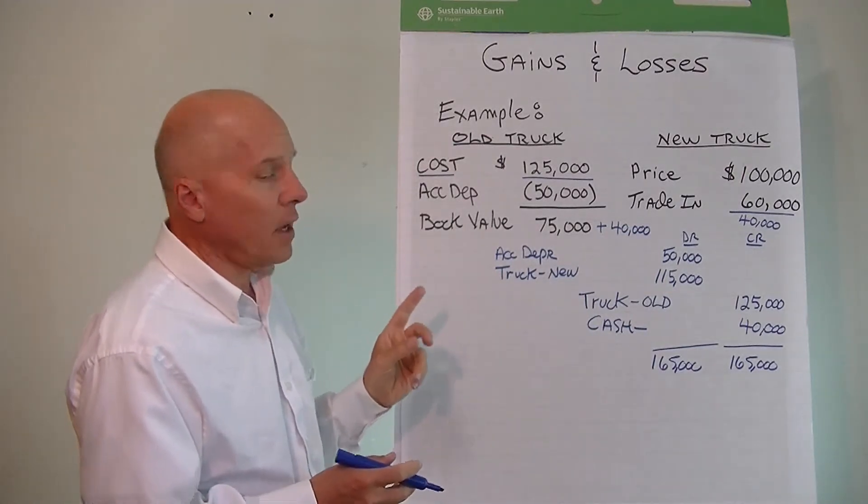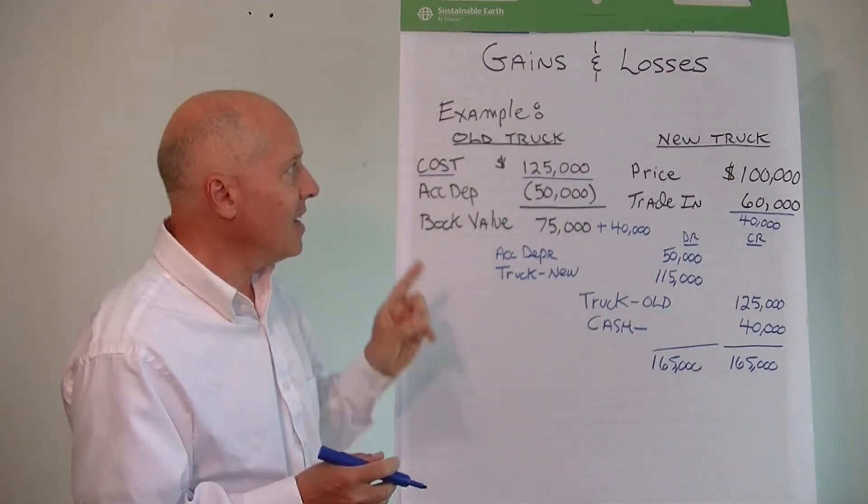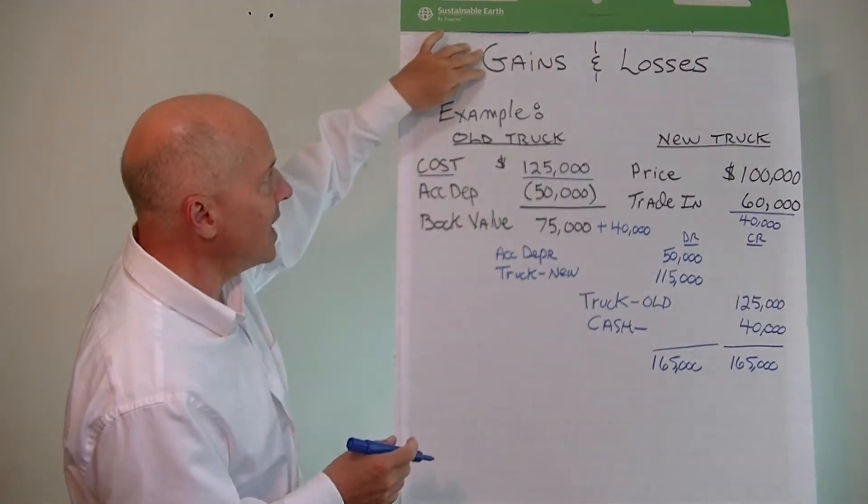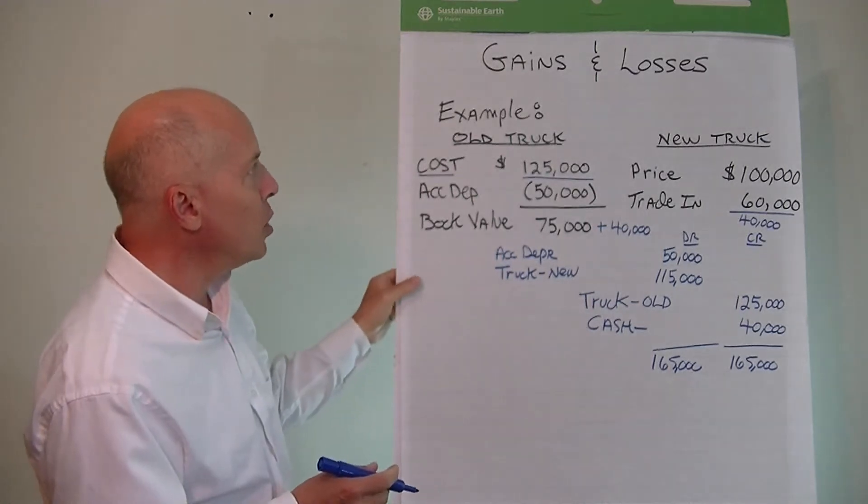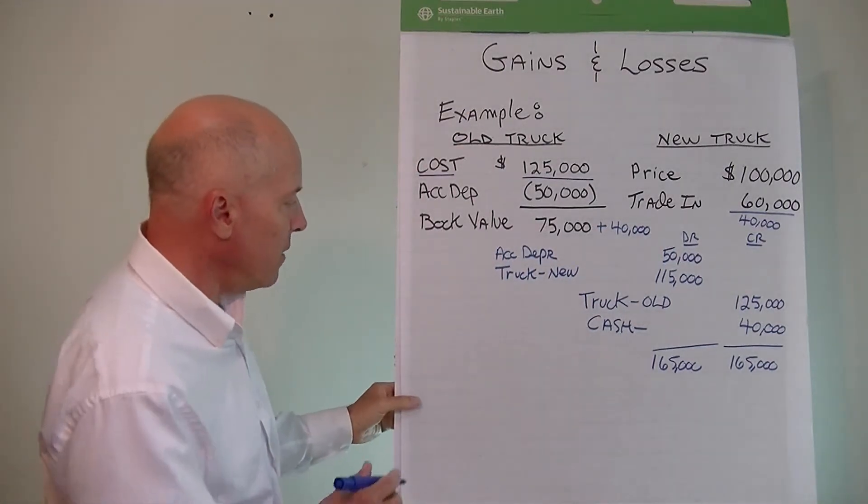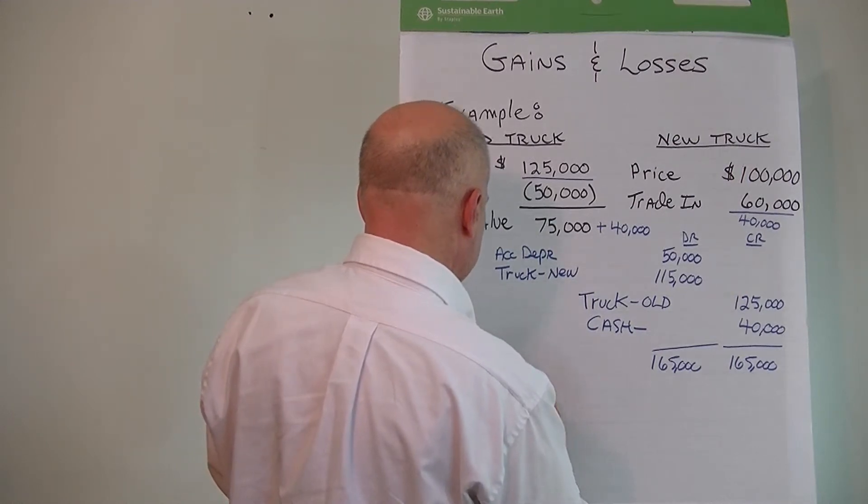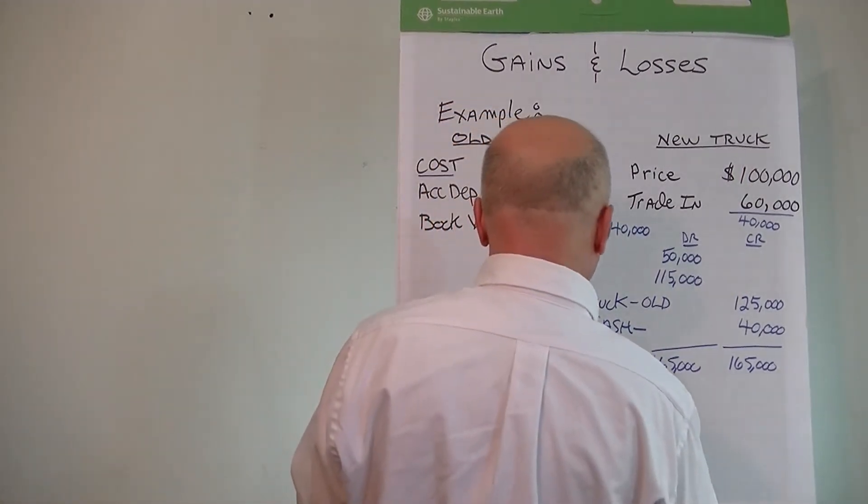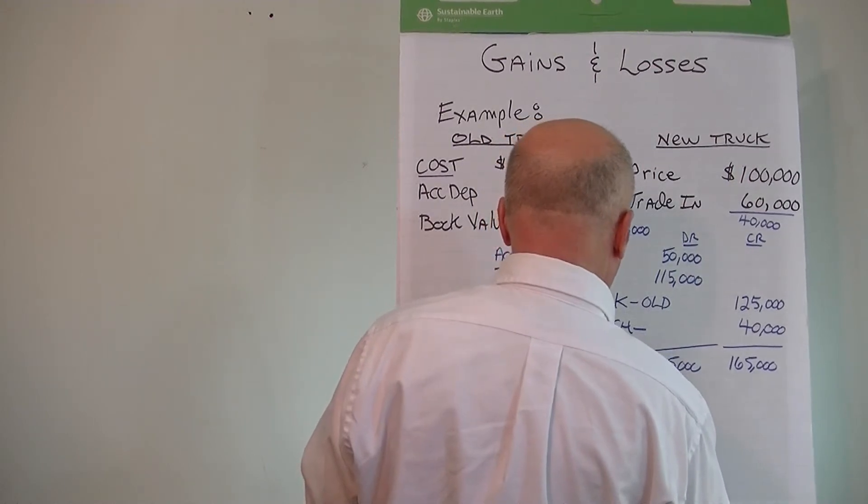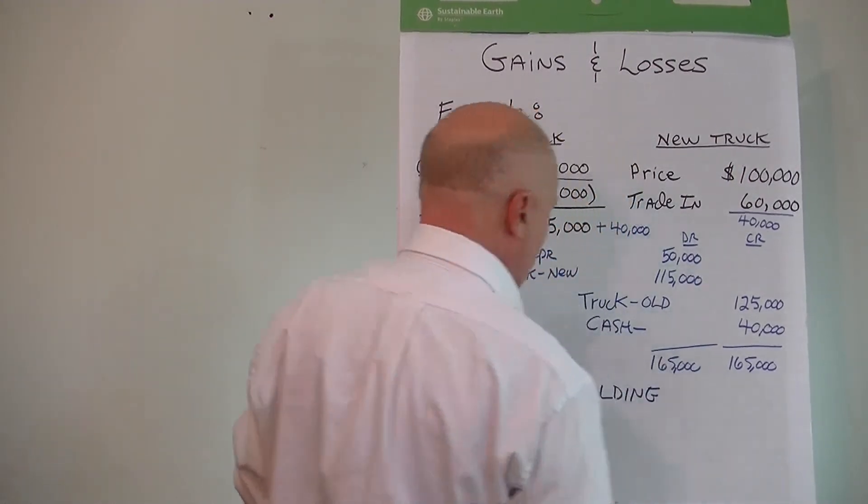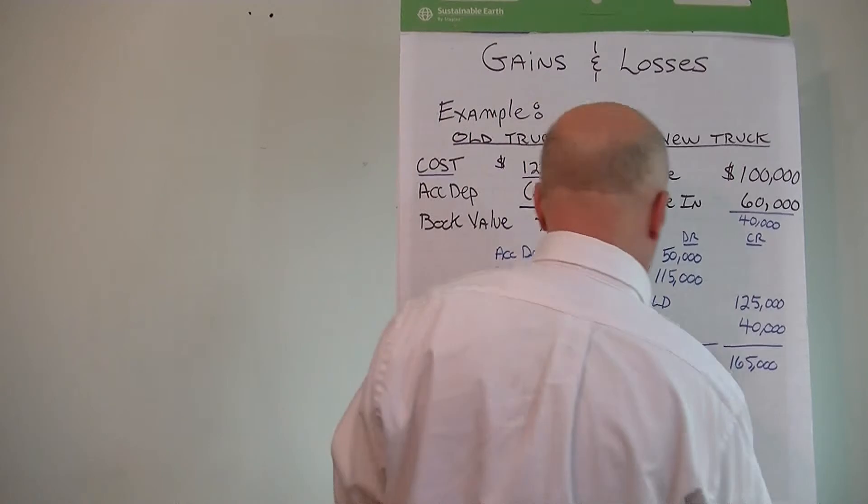One other thing I do want to mention is that when you recognize gains and losses on the books, you also have some tax implications. And those tax implications depend on what's called the holding period, and I'm speaking about the United States tax code.